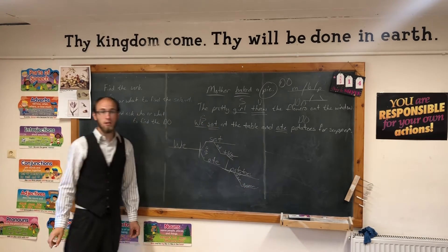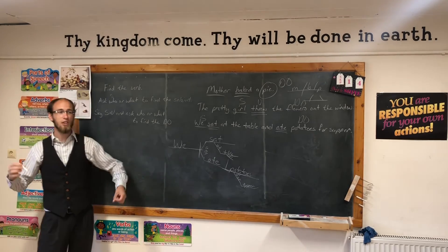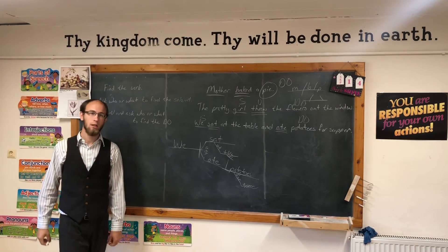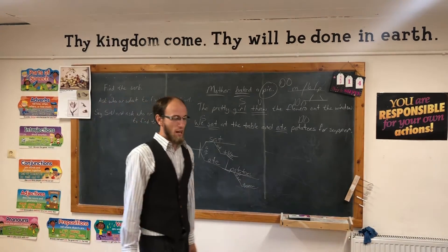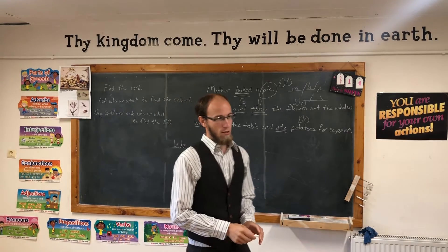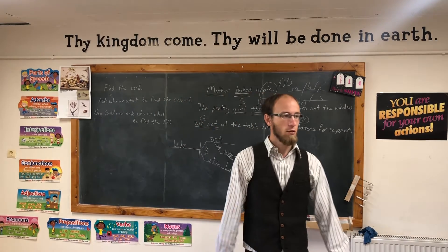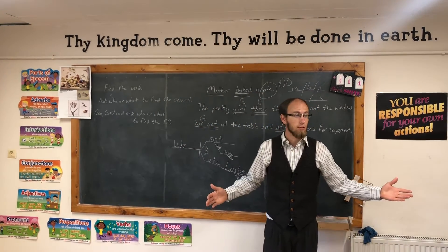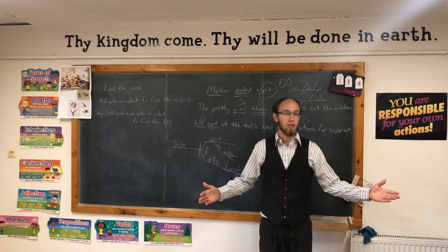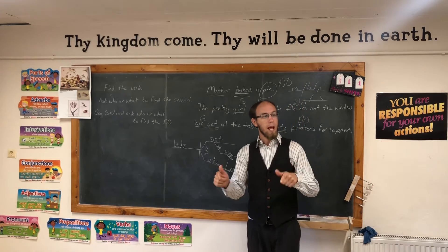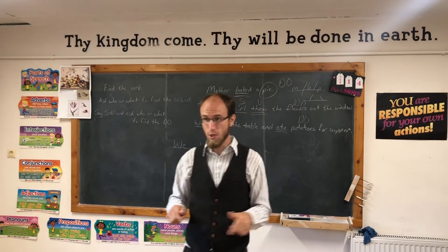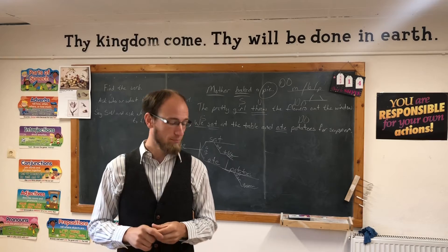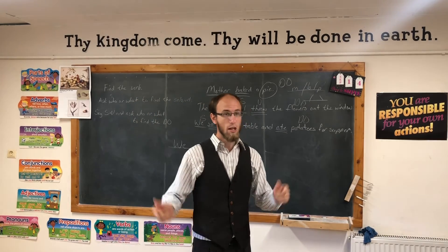Direct objects receive the action of the verb. Not all sentences have direct objects. We could have 'We sat at the table' — nothing is receiving the action. But 'We ate the potatoes' — potatoes is receiving the action of being eaten. Okay, that covers it for the lesson.